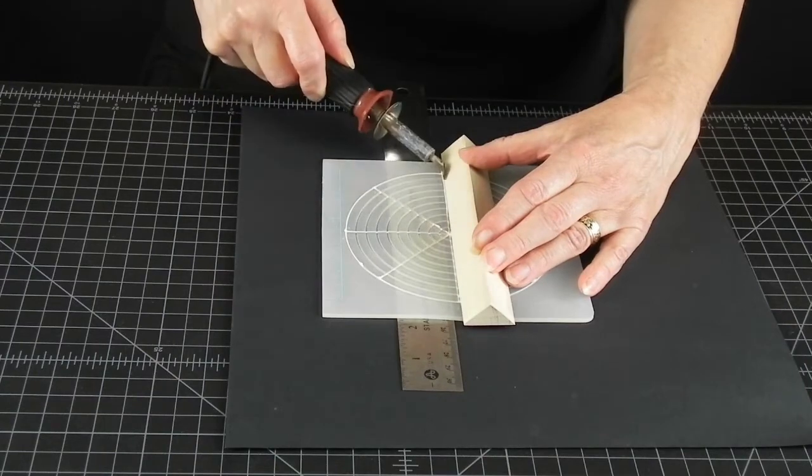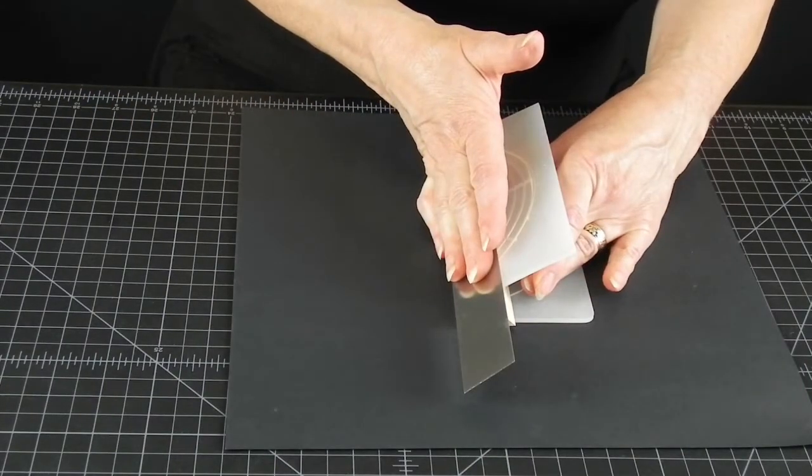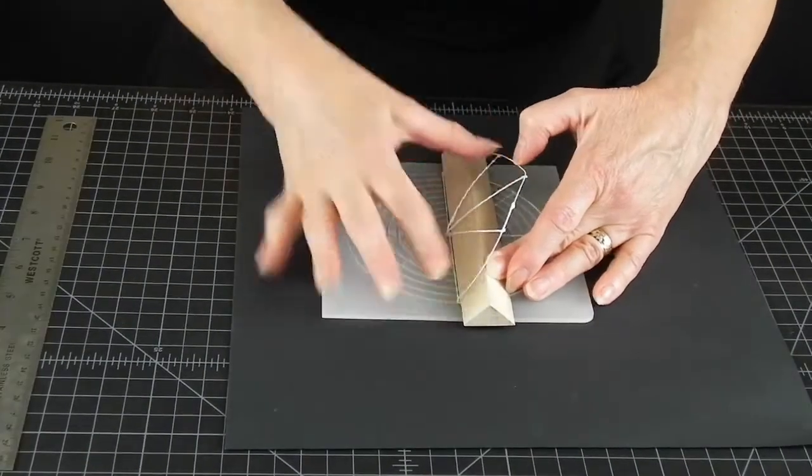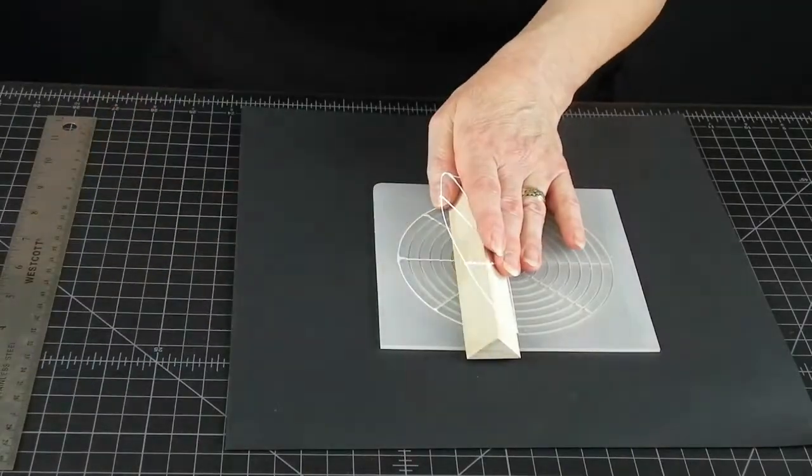Use a very light touch when reheating the spots you need to bend, so you don't accidentally cut the plastic all the way through. Even though if you do, it is entirely fixable.